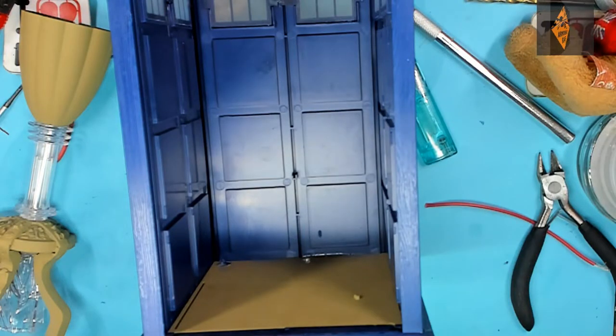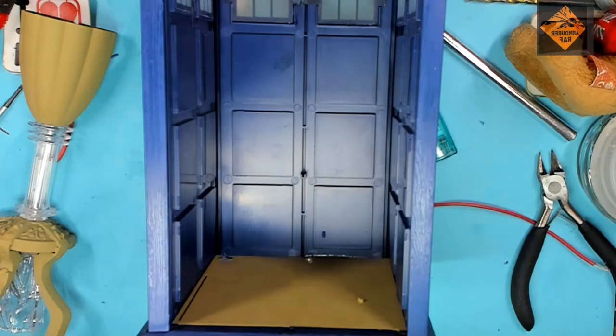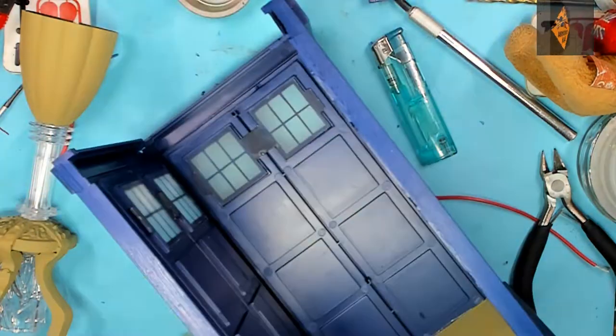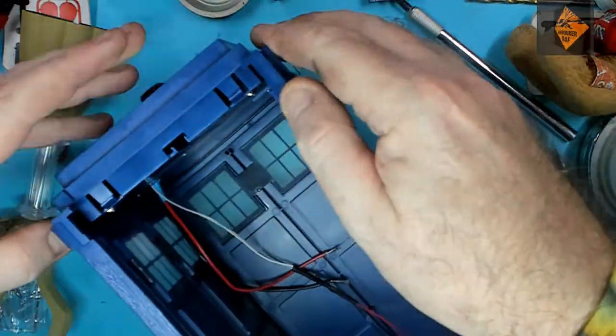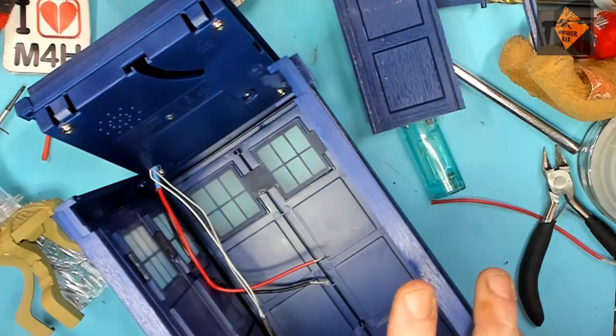Holes are big enough now to get the wiring loom through. So let's get this light fitted. Right, there's the light fitted. Now to test it. Yep, it's still working. Get in there. Next, the rest of the wiring loom that goes behind the backdrop.